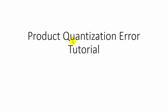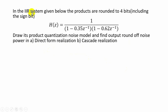Here we are going to see a tutorial based on product quantization error. An IIR system is given with the transfer function H(z) = 1 / [(1 - 0.35z⁻¹)(1 - 0.62z⁻¹)], and the products are rounded to 4 bits. We are going to draw the product quantization noise model and find the round-off noise power using direct form realization as well as cascade form realization.